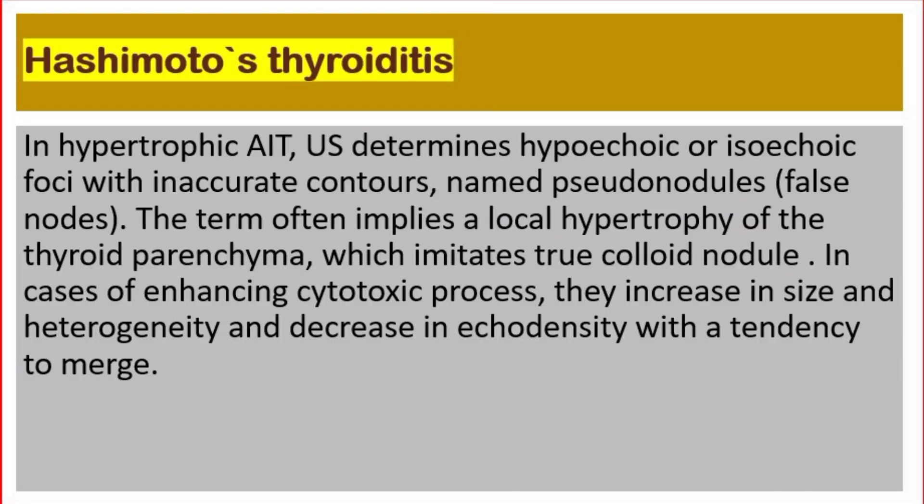In hypertrophic autoimmune thyroiditis, ultrasound identifies hypoechoic or isoechoic foci with inaccurate contours, named pseudonodules. The term often implies a local hypertrophy of the thyroid parenchyma which imitates true colloid nodules. In cases of enhancing cytotoxic process, they increase in size and heterogeneity and decrease in echo density, with a tendency to merge.